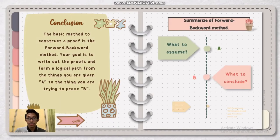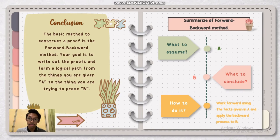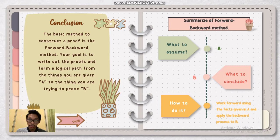Finally, the conclusion for the forward-backward method is that it is the most fundamental method for creating a proof. Consider the statement: if A then B. Your goal is to try to write out the proofs and construct a logical path from the things you are given, which is A, to the thing you are attempting to prove, which is B. We will use the forward-backward method as a first attempt for when B does not have a recognizable form. This is the abridgment of the forward-backward method. I think that's all from us. Thank you for watching.